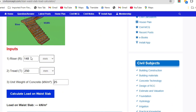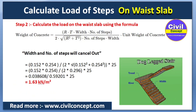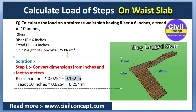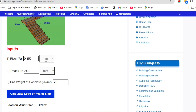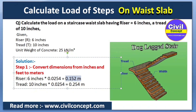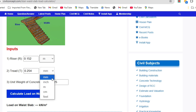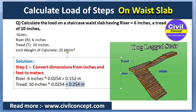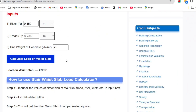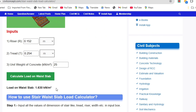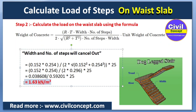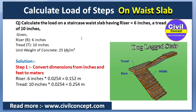In the calculator, enter the riser value of 0.152 m and the tread value of 0.254 m. You can also input values in mm or inches. Enter the unit weight of concrete as 25 kilonewton per meter cubed. Click 'Calculate Load on your Slab' and the result is 1.630 kilonewton per meter square, which matches our manual calculation of 1.63 kilonewton per meter square.